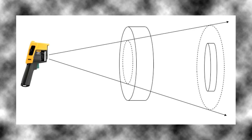In the second case the target is smaller than the spot size and any temperatures that are in that area will be averaged in with the temperature of the target.